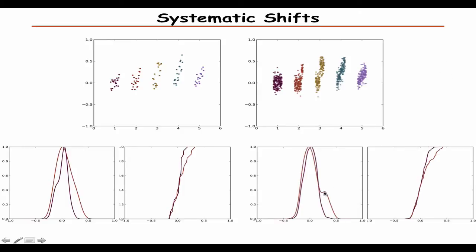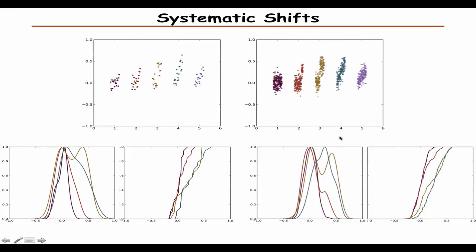It's much easier to see these kinds of systematic problems by showing all the data points as a function of how they were acquired. Because if you look at the kernel density estimates or cumulative distribution functions, you won't see it as clearly. For the case with a big jump, you can see a bimodal distribution in the kernel density estimate. But for linear drifts, there's really no easy way to tell from either the kernel density estimate or cumulative distribution function that something went wrong. So definitely remember — even though plots of all data points in acquisition order are usually not exciting, they shouldn't be exciting; they should look boring and random.